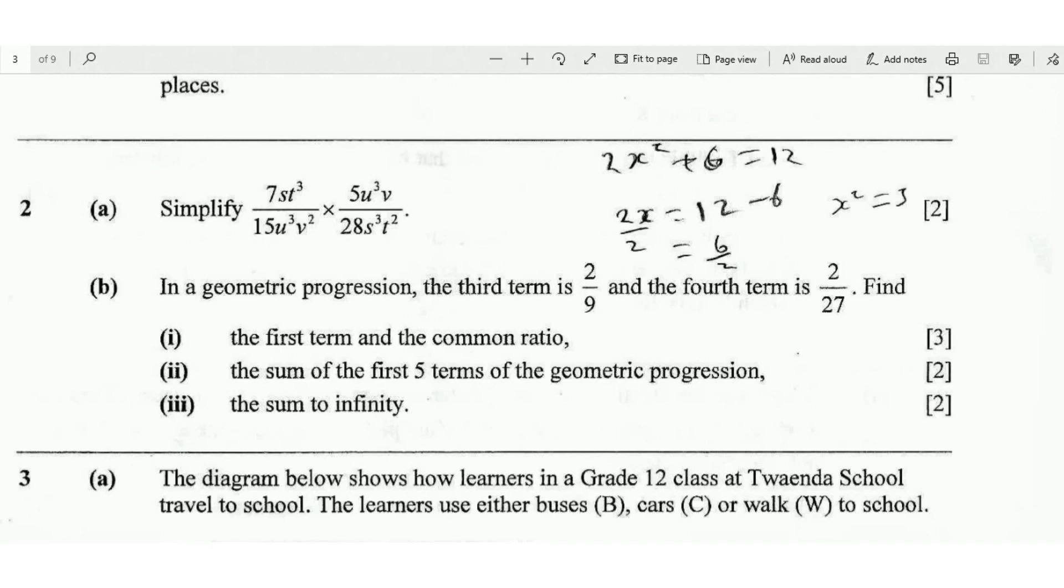So we know that from the question, the third term is 2 over 9, so T3 equals 2 over 9. And the fourth term, which is T4, is equal to 2 over 27.